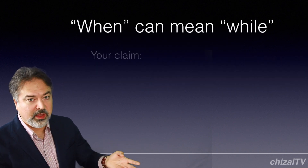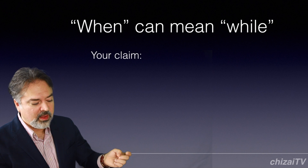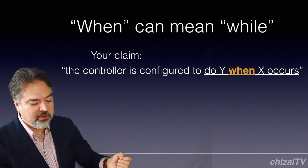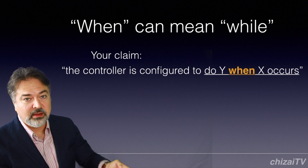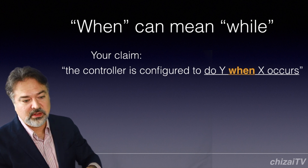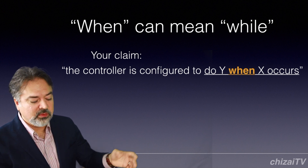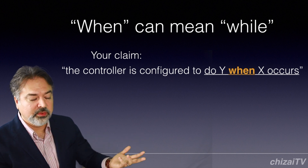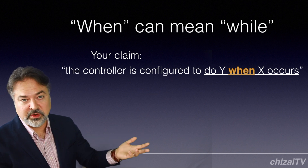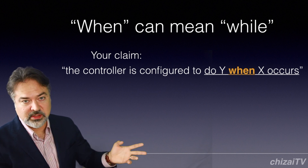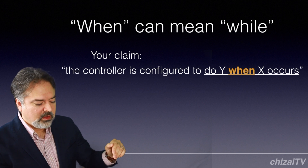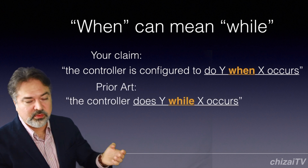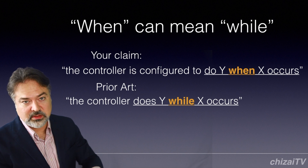Let's get an example. So your claim says the controller is configured to do Y when X occurs. So that means when X occurs, the controller will do whatever function Y is. X and Y are just some kinds of functions. And the prior art says the controller does Y while X occurs.